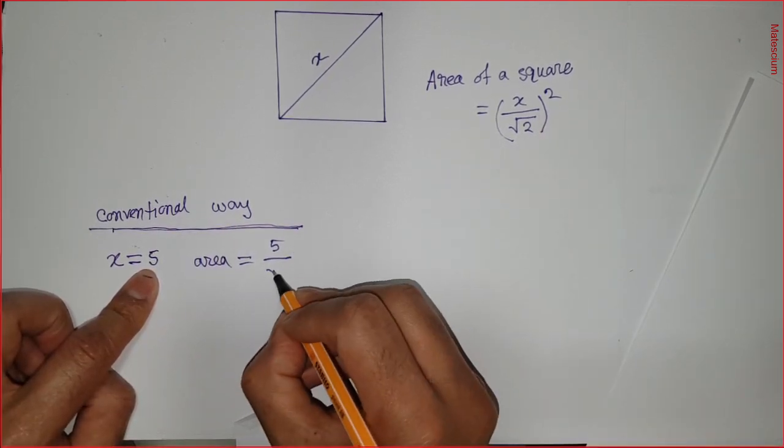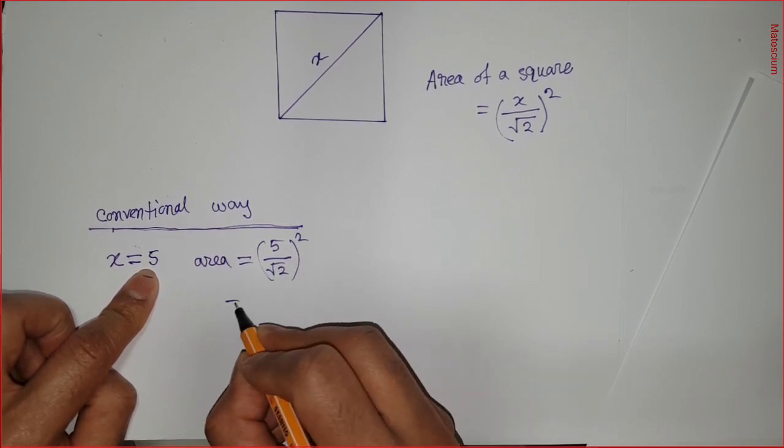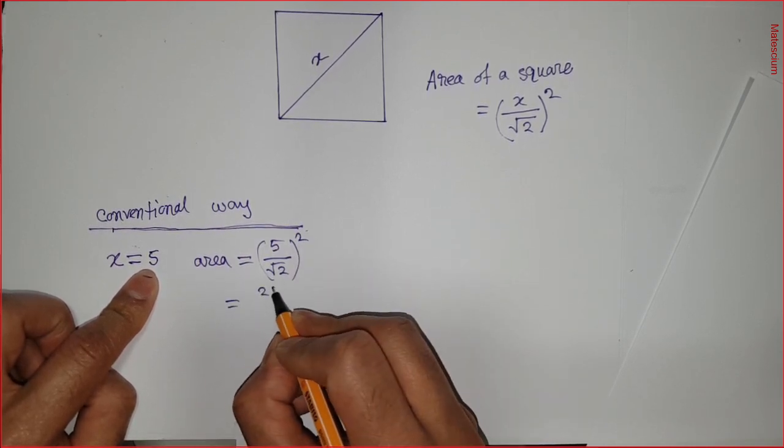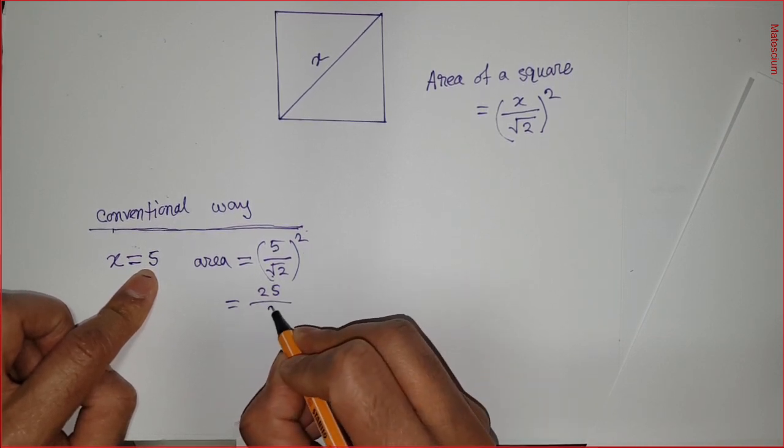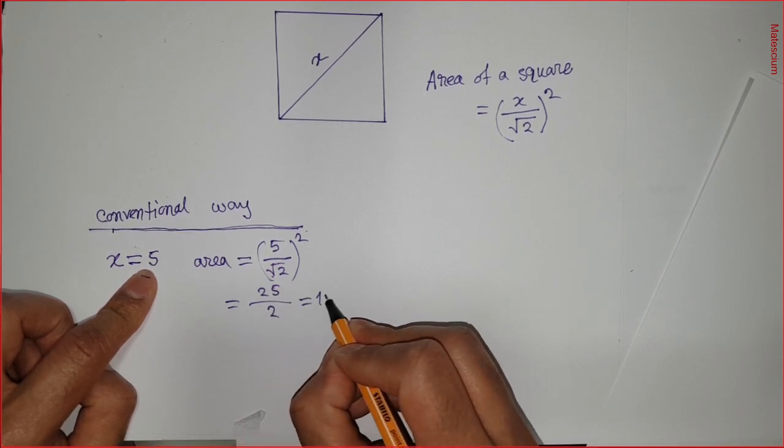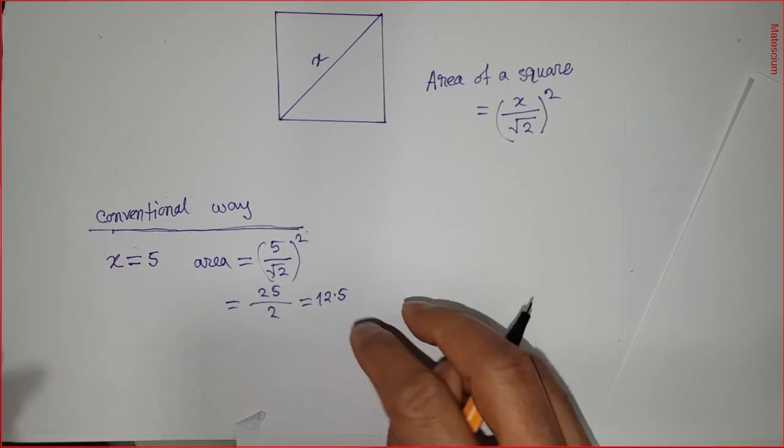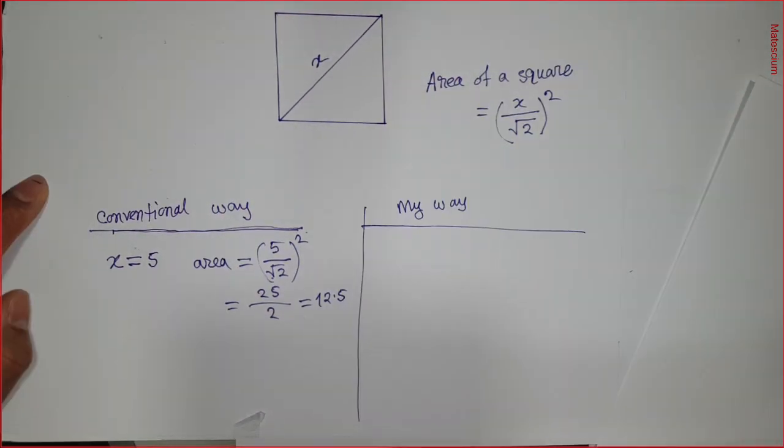5 divided by √2, then whole squared. 5² is 25, and this square removes the square root, only 2 remains. So 25 divided by 2, which equals 12.5. This is the answer of the total area if the diagonal length is 5.